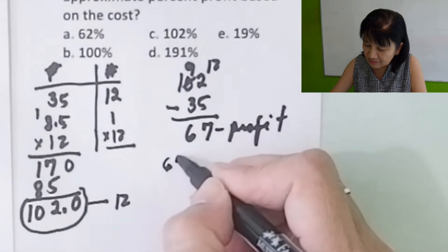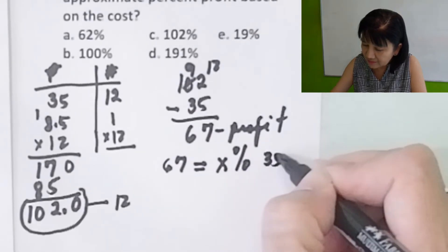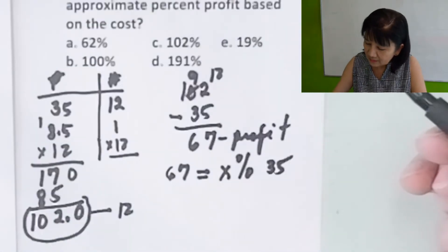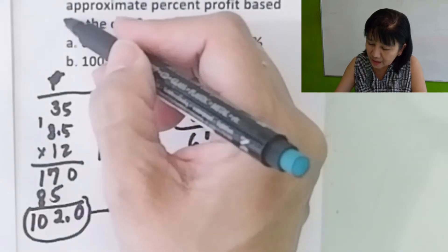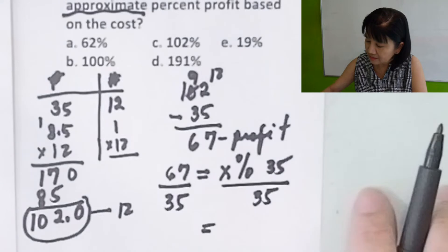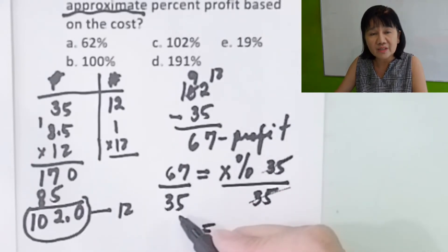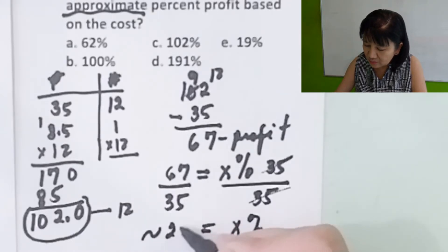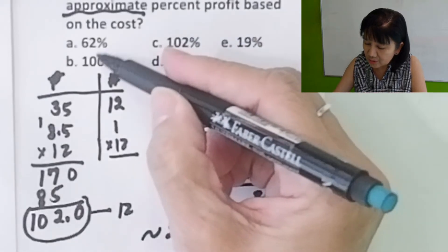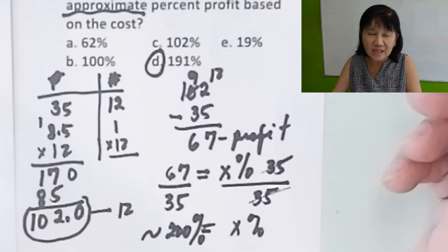Now, we're asking: 67 is what percent of the cost, which is 35? To get x percent, divide both sides by 35. Since the problem asks for the approximate percent, note that 67 is around 200% of 35 because 35 times 2 is 70. So you pick the answer nearest to double, or 200%. The correct answer is letter D. In entrance exams, you should know how to approximate the nearest answer.